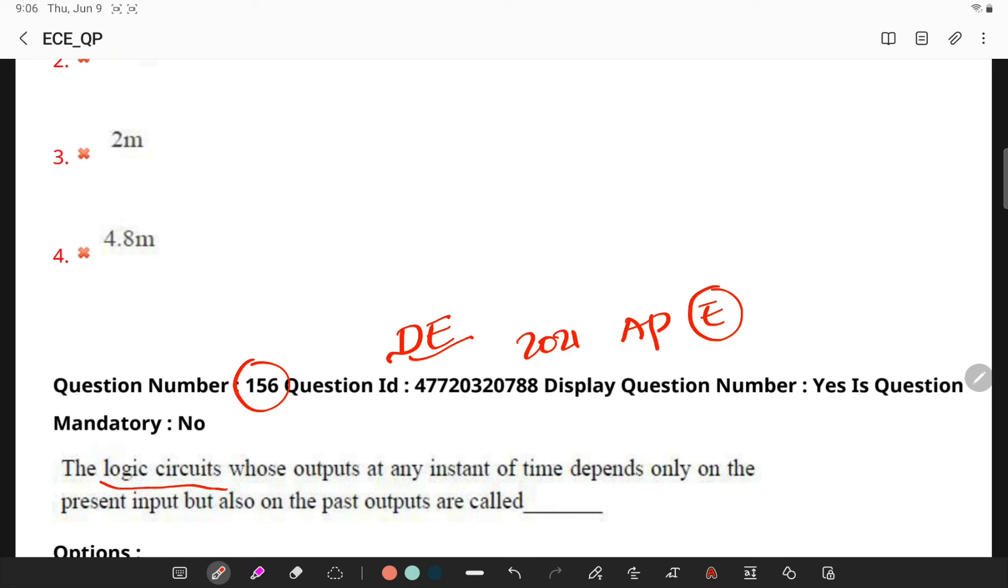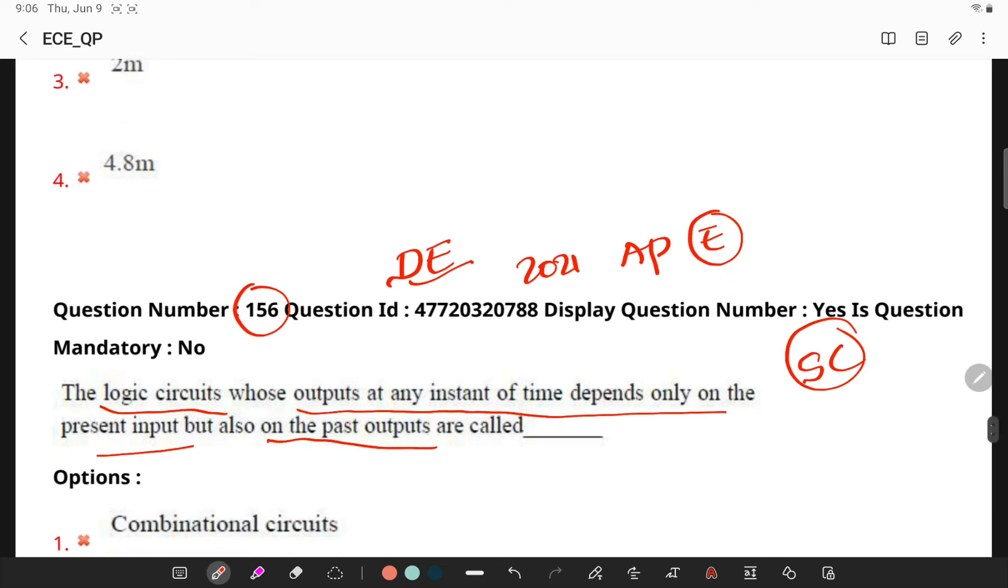The logic circuits whose output at any instant of time depends only on the present input but also on the past outputs are called sequential circuits. Now, in sequential circuits, the output signal is fed back to input side.